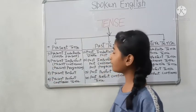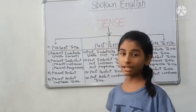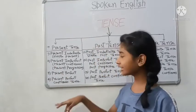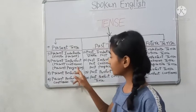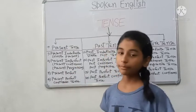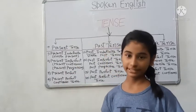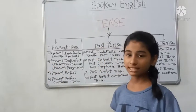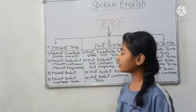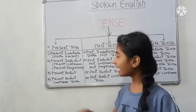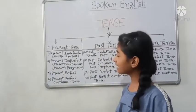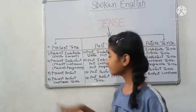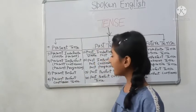The next part of Present Tense is Present Imperfect Tense, also called Present Continuous Tense or Present Progressive Tense. Both names — Present Continuous and Present Progressive — refer to the same tense.